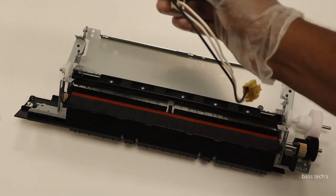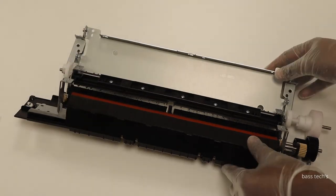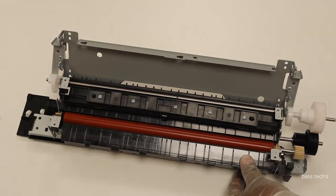This unit can be replaced as a complete item. Following the fixing film assembly, we have a pressure roller.